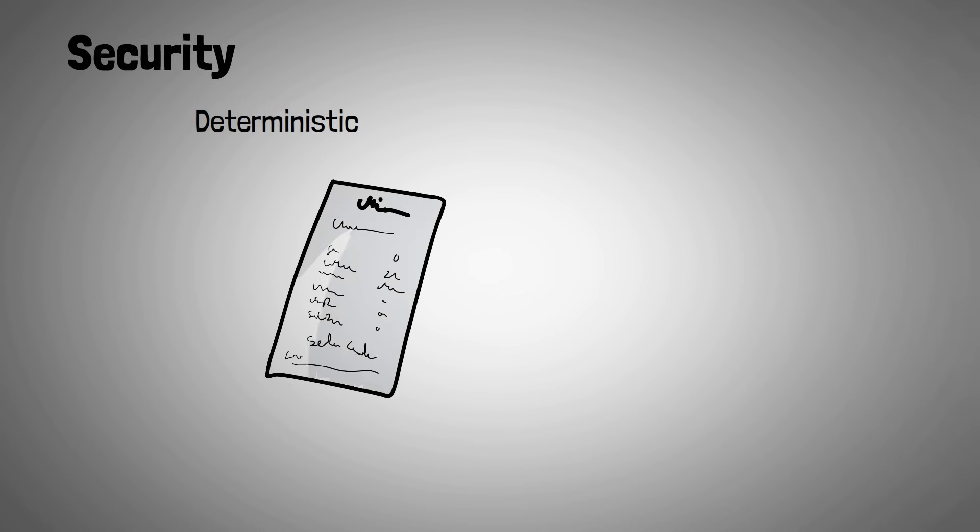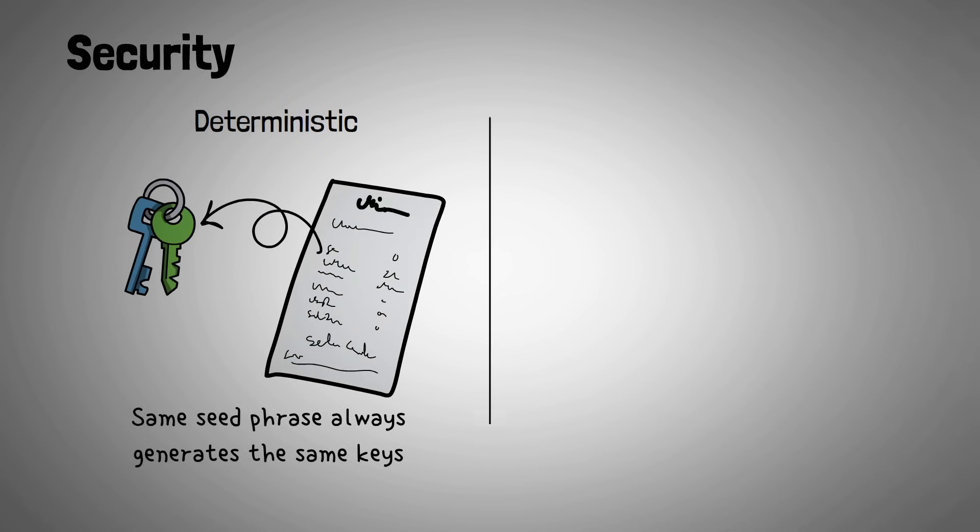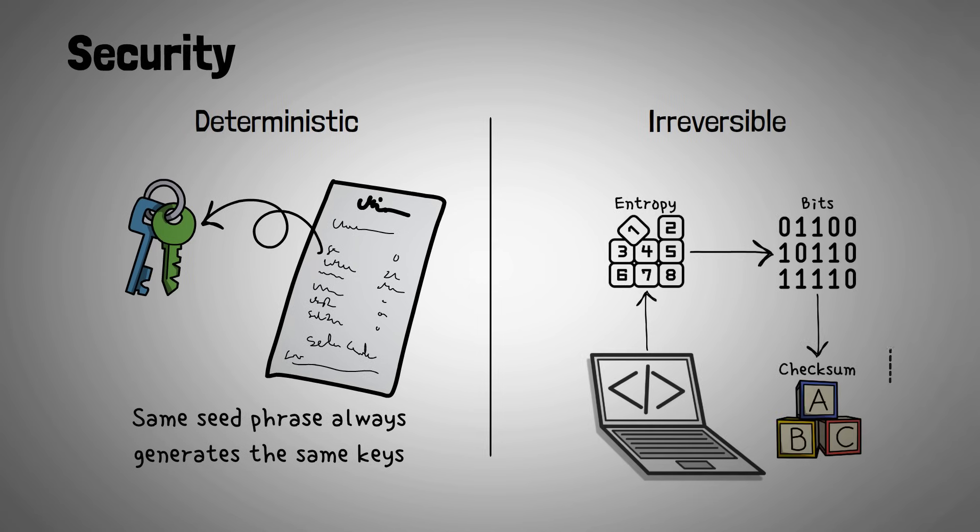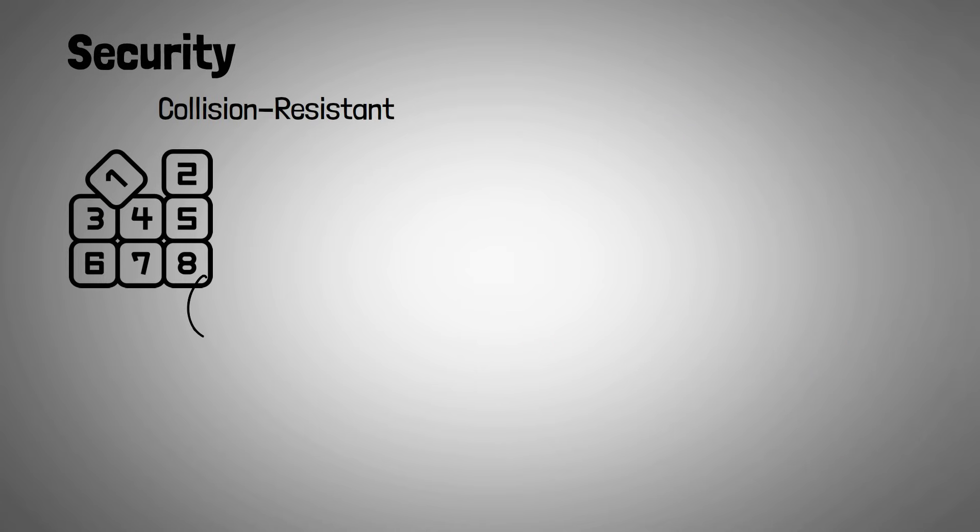Let's move on to some security aspects. BIP39 has some important security features. Namely, it's deterministic, meaning the same seed phrase always generates the same keys in the same order. It's also irreversible, as it's computationally infeasible to reverse the process and obtain the original entropy or the seed phrase from a private key. And lastly, it's collision-resistant, meaning it's unlikely for different entropy to produce the same seed phrase or different seed phrases to produce the same private keys.